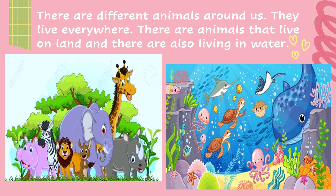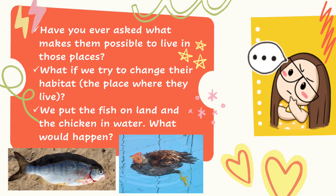There are different animals around us — they live everywhere. There are animals that live on land and animals that live in water. Have you ever asked what makes it possible for them to live in those places? What if we try to change their habitat — the place where they live? What if we put the fish on land and the chicken in water? What would happen?